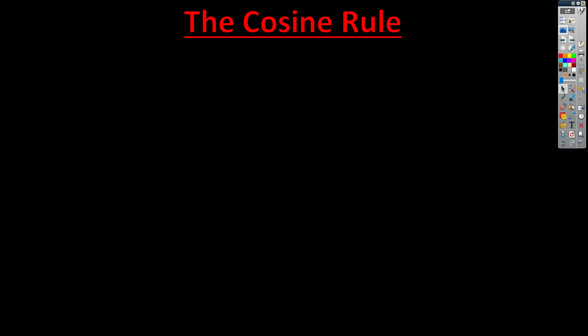In this video, we're going to get a proof for the cosine rule, which is basically an extension of Pythagoras' theorem that includes triangles that don't necessarily have 90 degrees in them.